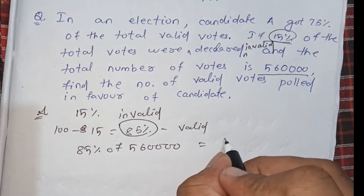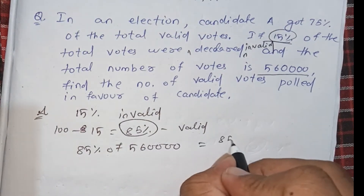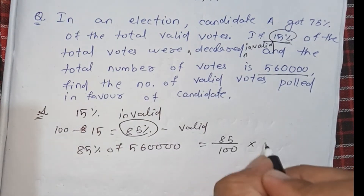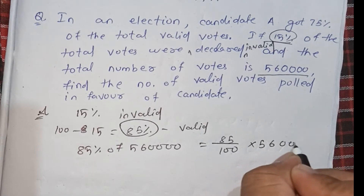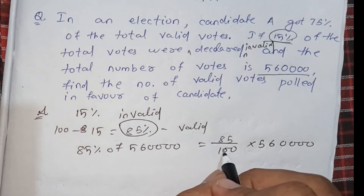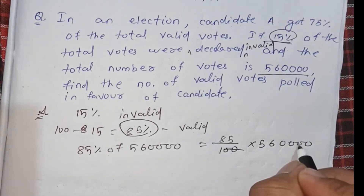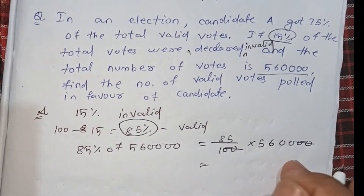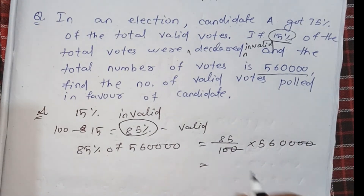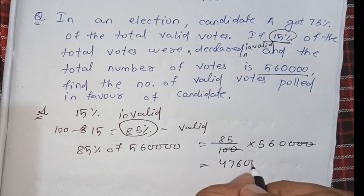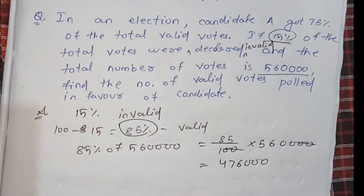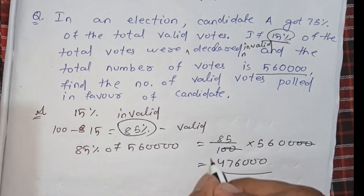85% of 5,60,000 is calculated as 85 divided by 100 multiplied by 5,60,000. The 20s cancel out, and when you multiply, you get 4,76,000. This is the total number of valid votes.